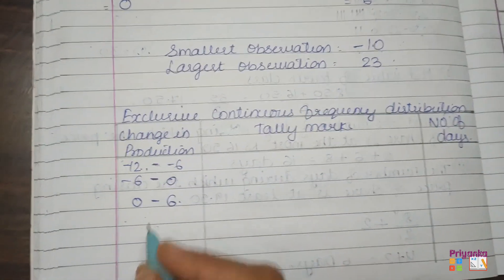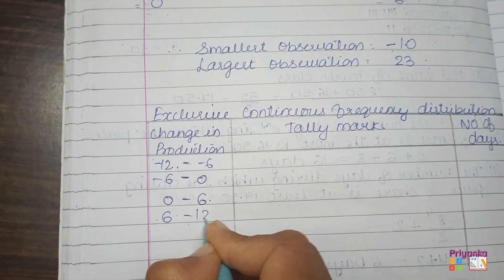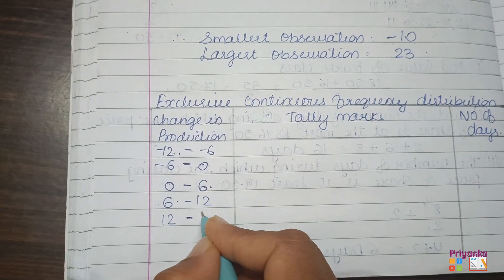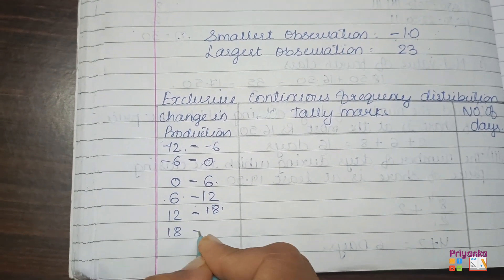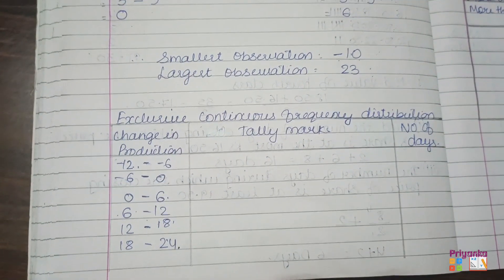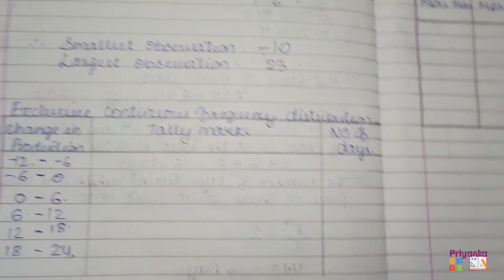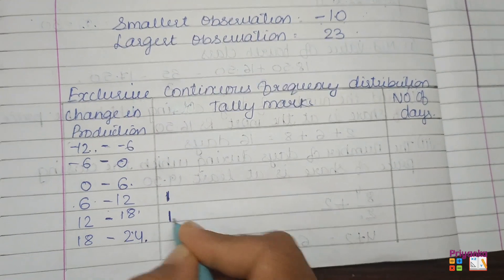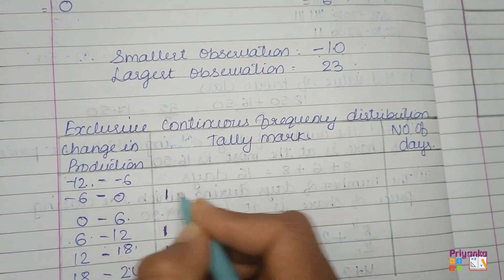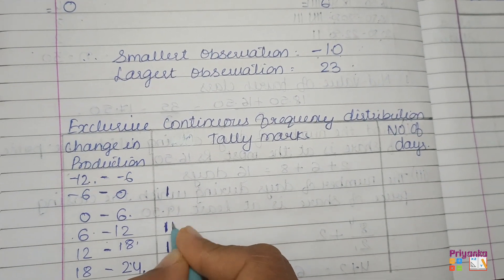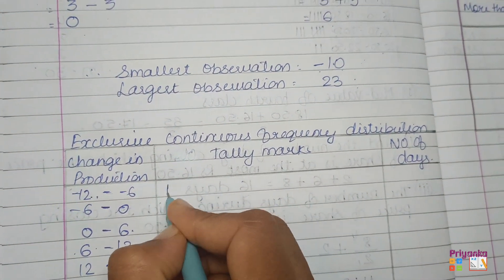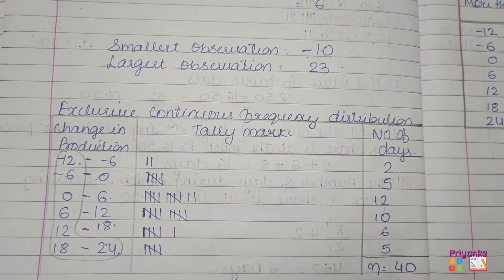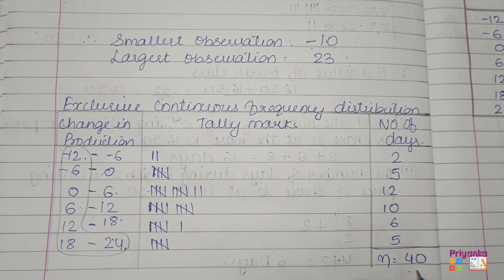Going in ascending order from 0: classes are 0 to 6, 6 to 12, 12 to 18, and 18 to 24. After writing all the classes, we start tally marking. Values such as 7, 14, minus 3, 6, and minus 10 are placed in their respective classes. After completing the tally marking, we total the frequencies and confirm n equals 40.